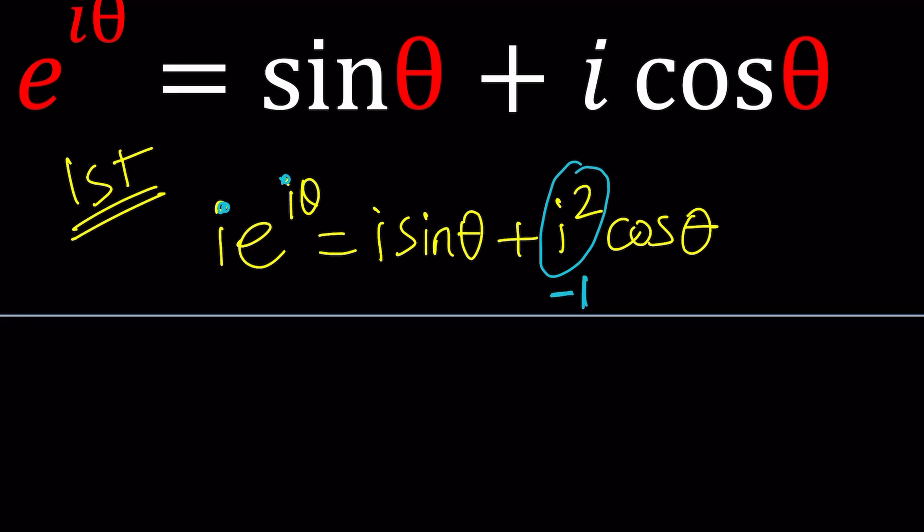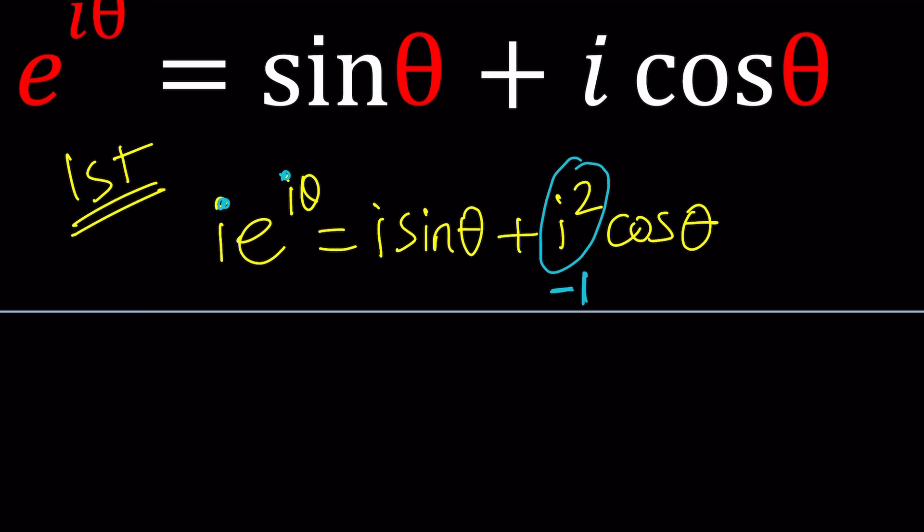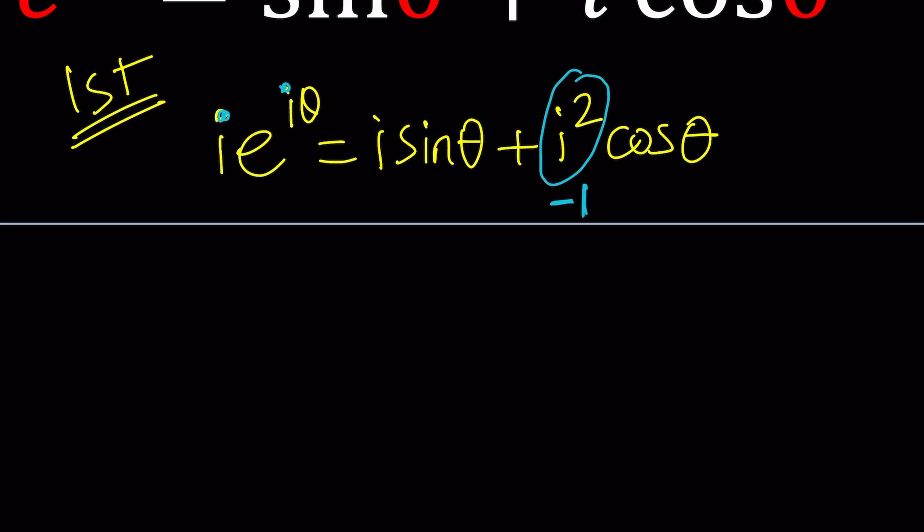What does this give us though? We kind of have something interesting on the right-hand side because it switches the sine and cosine, but it also negates the cosine. You see what I'm saying? We're going to write this as negative cosine theta, writing this part first, plus i sine theta.